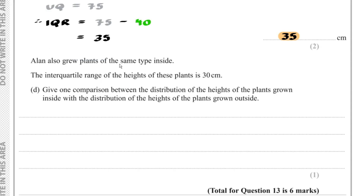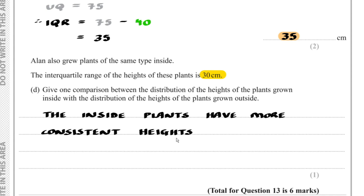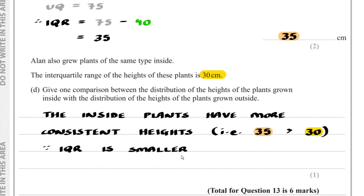Part D: Allen also grew plants of the same type inside, with an interquartile range of 30 cm. The inside plants have a smaller IQR (30) compared to the outside plants (35), so the inside plants have more consistent heights.